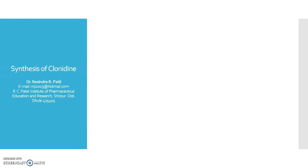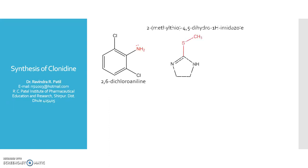Next is the synthesis of clonidine. Clonidine is synthesized starting with 2,6-dichloroaniline, which is allowed to react with 2-methylthio-imidazoline.